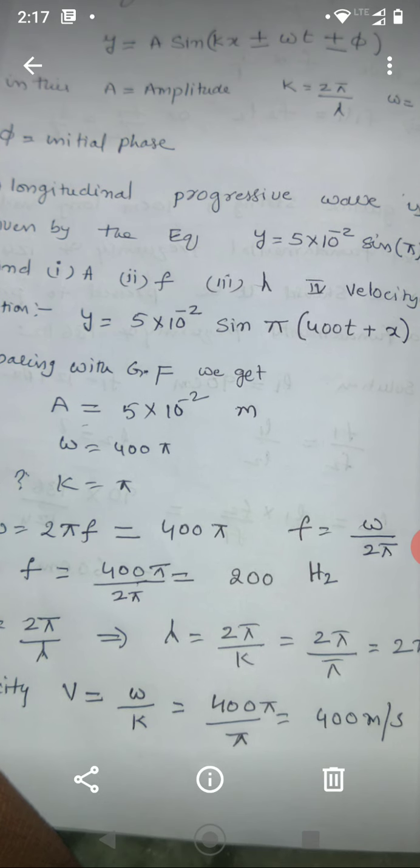General form of equation. So, what you are getting? Amplitude A is equal to 5 times 10 to the power of minus 2. And omega. Omega means it is coefficient of t. So, 400 pi.